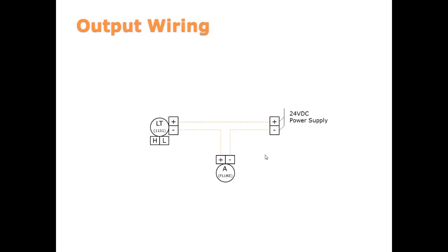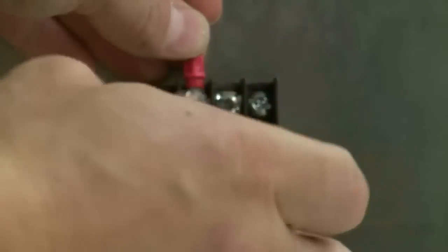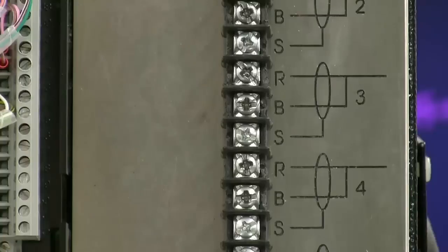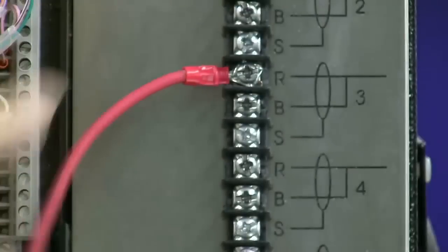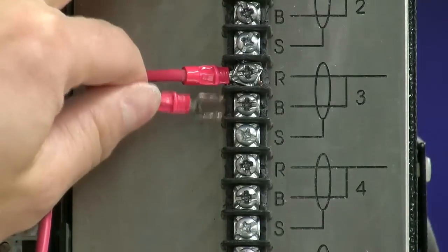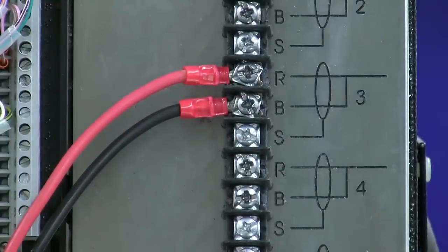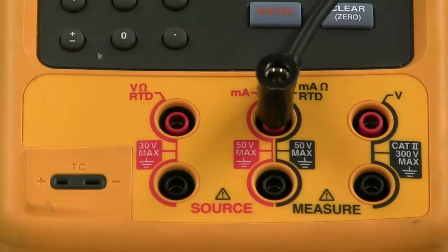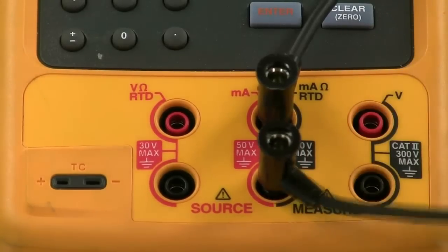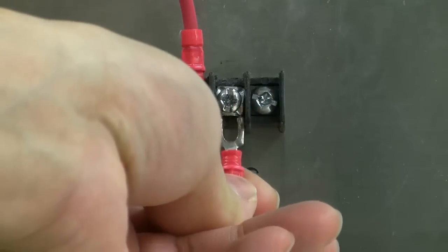We can now proceed to wire the 24-volt power supply and the Fluke to the loop. Start by connecting to the positive on the power supply. The current will flow from the power supply positive out to the transmitter positive, which is the red on cable pair 3. Coming out of the transmitter on black, it will flow into the milliamp port on the Fluke. Coming out of the common port on the Fluke, it will complete the loop at the negative of the power supply. The completed loop should look something like this.